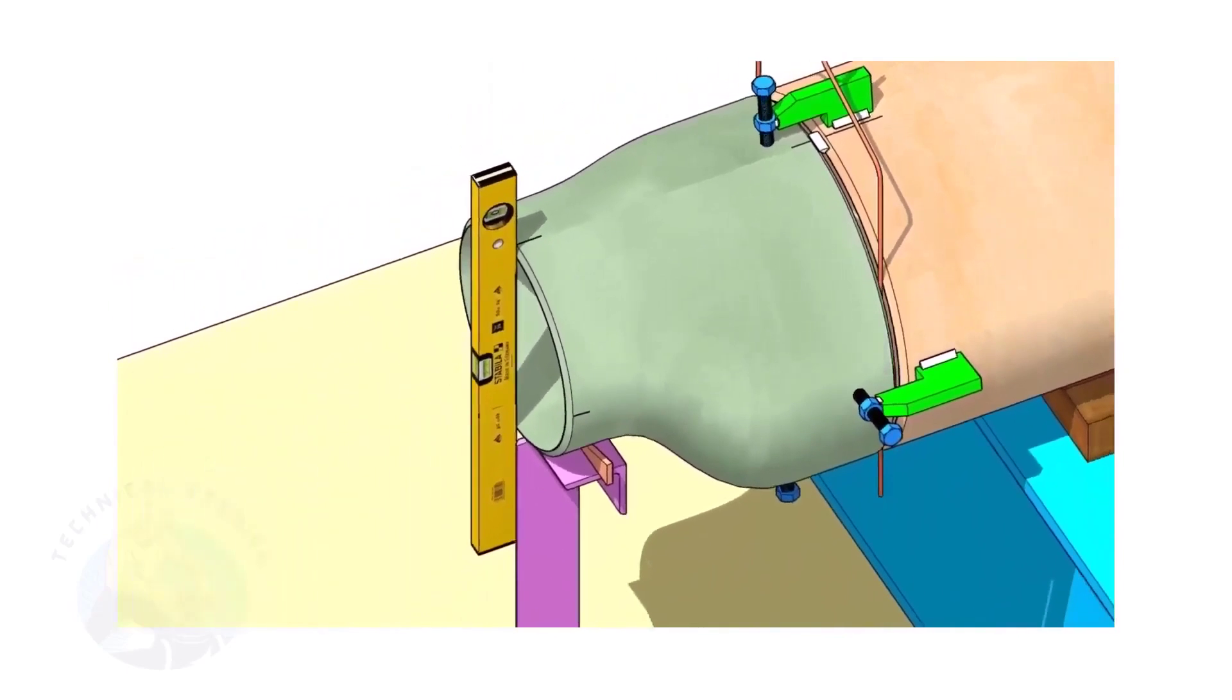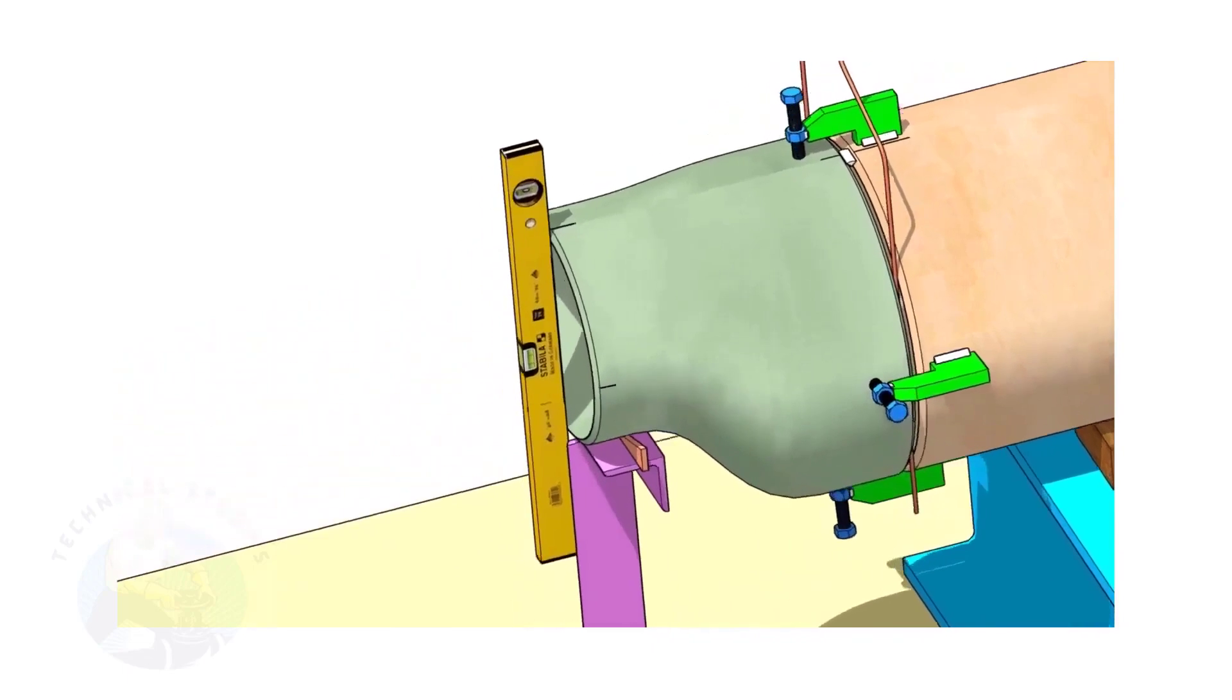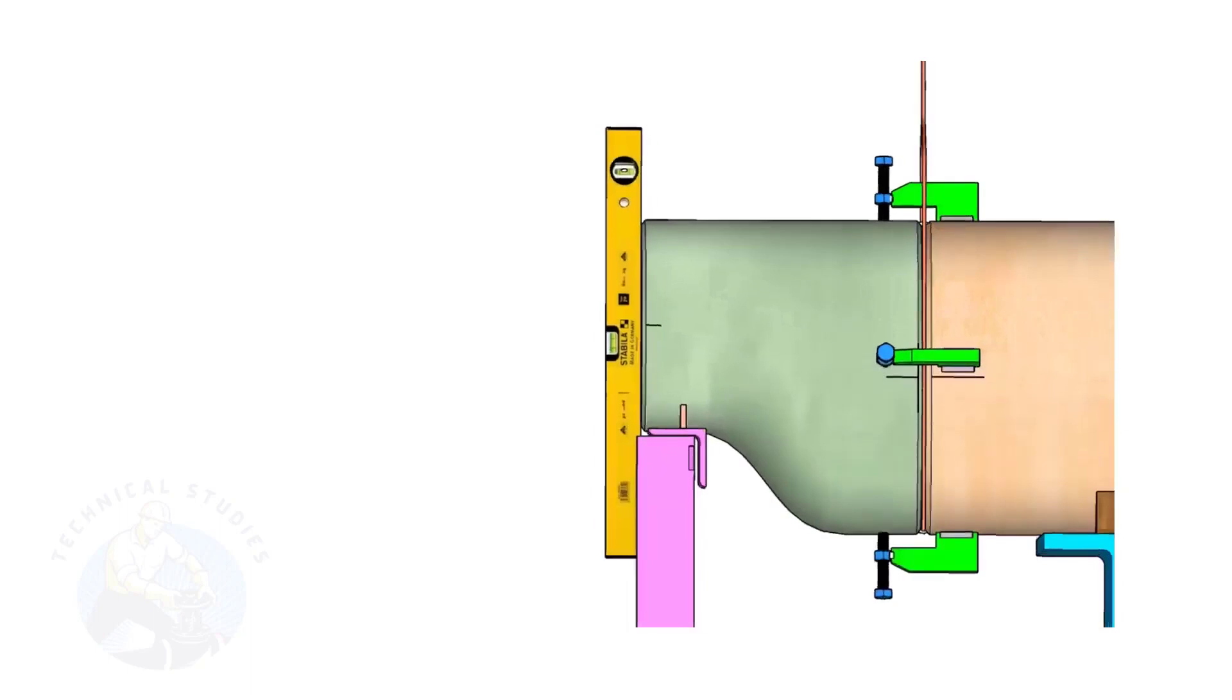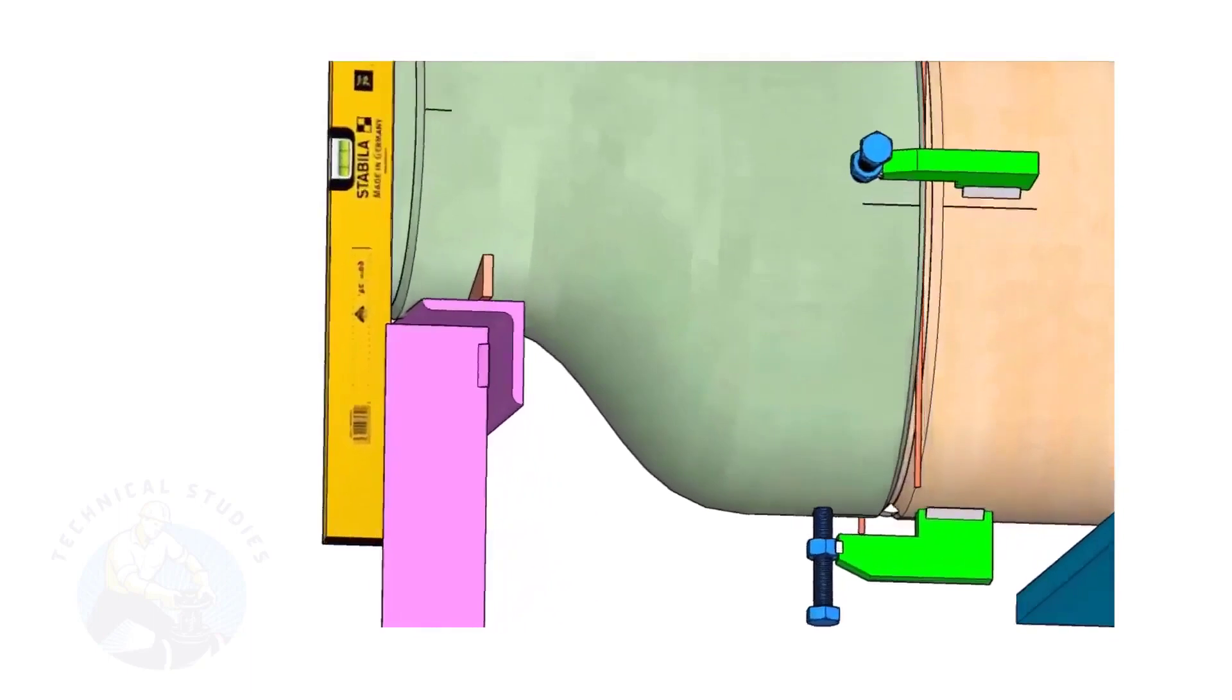Correct the levelness of the outer face of the reducer. Tack weld in the bottom side of the joint.